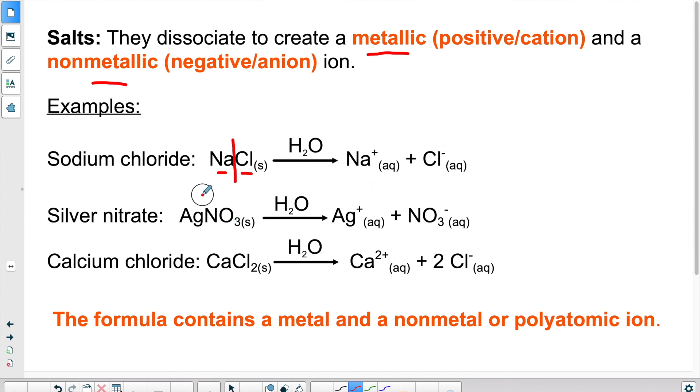Silver nitrate. So again, we split in two into the metallic part and the non-metallic part. So the metallic part is silver, Ag plus. Non-metallic, NO3. So we know that this is one of our polyatomic ions, NO3 minus.